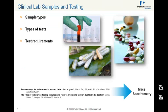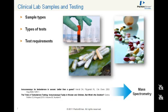Sample types include blood, serum, plasma, urine, and all types of clinical samples expected to be run in these assays. The types of tests that could be run include general and routine tests like glucose, endocrinology tests for testosterone, vitamins like 25-hydroxyvitamin D — which we'll show an example of later — immunological tests for antibodies, pharmacological tests like therapeutic drug monitoring, and toxicological tests like drugs of abuse.